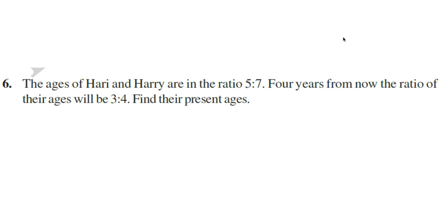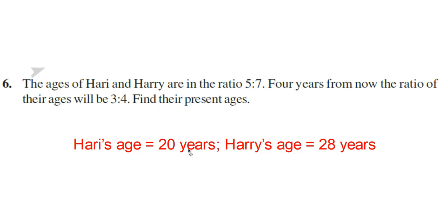Here is a question for you. The ages of two persons are in the ratio 5:7. Four years from now, the ratio of their ages will be 3:4. Find their present age. Take present ages as 5x and 7x. Four years from now: 5x + 4 and 7x + 4. Their ratio (5x + 4) / (7x + 4) = 3/4. Cross multiply and find the value of x. The answers are 20 years and 28 years — do yourself.